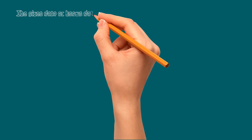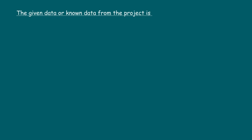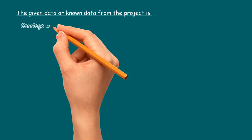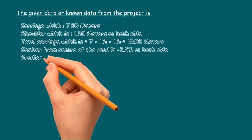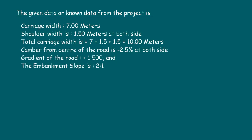Now we will see in detail how the earthwork quantity is calculated. The given data from the project is: carriage width 7 meters, shoulder width 1.5 meters at both sides. Total carriage width equals 7 plus 1.5 plus 1.5, which is equal to 10 meters. Camber from center of the road is minus 2.5% at both sides. Gradient of the road is plus 1 to 500. And the embankment side slope is 2 to 1.